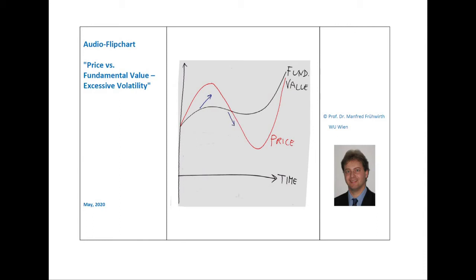The second fact: the price fluctuates far more than the underlying fundamental value. This phenomenon was first pointed out by Professor Robert Shiller from Yale — already in 1981. He showed that stock prices fluctuate significantly more than the underlying fundamental value. This is called excessive volatility. In 2013, he received the Nobel Prize, among others, for this finding.